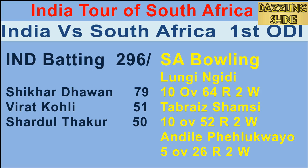Fifth ball of the 36th over, Nagidi to Thakur — short ball, Thakur looks to pull it straight to the fielder at deep square leg who takes the catch. Another wicket falls and India are in trouble. However, last ball of the 38th over, Thakur clips one going down the leg side to the boundary for four.